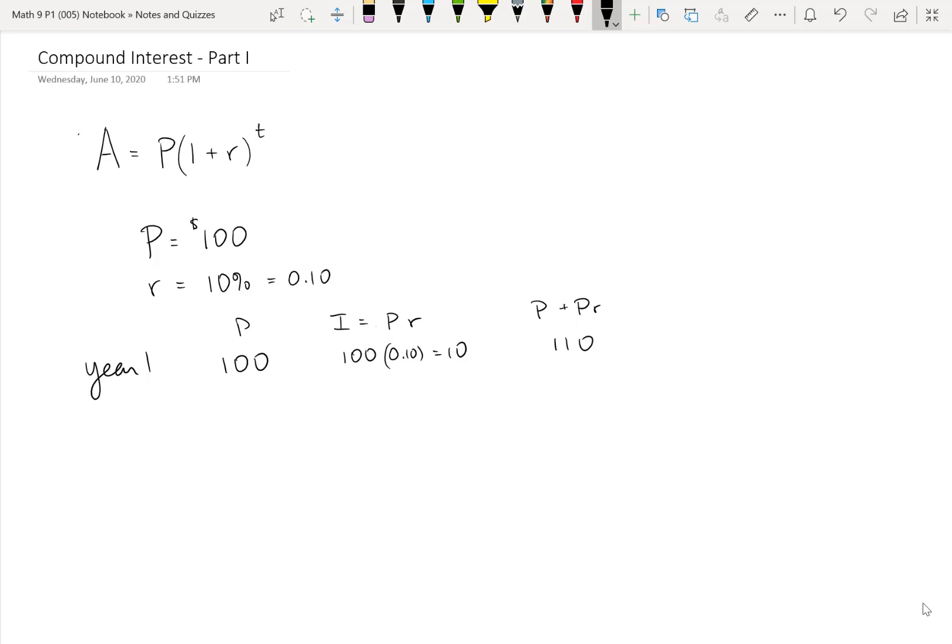Now, in a simple interest sort of scenario, this would be identical. There'd be no difference at all. So in the case of annual compounding, which is what we're looking at here, there's no difference over the course of a year between compound interest and simple interest. You would have $110 in your account at the end of the year, if it were simple interest as well.